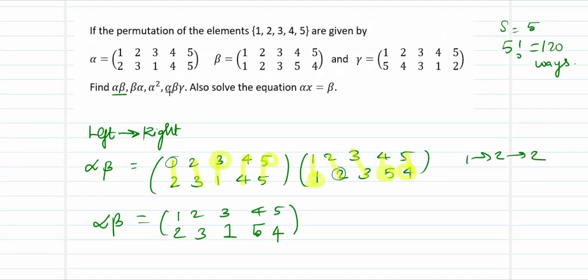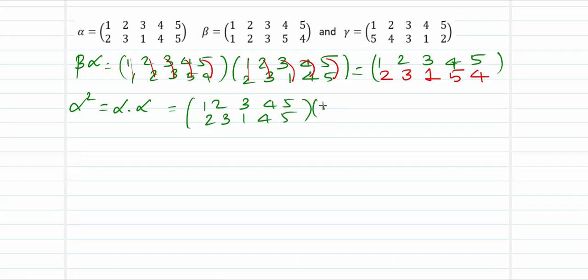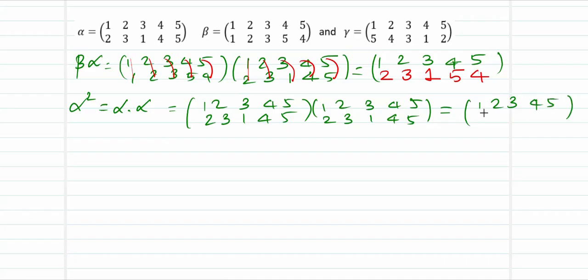The next quantity needed is alpha square. Alpha square is nothing but alpha times alpha — the same composition done for alpha twice. So place 2 copies of alpha side by side: (1, 2, 3, 4, 5) → (2, 3, 1, 4, 5), and do the composition from left to right. 1 maps to 2 then to 3; 2 maps to 3 then to 1; 3 maps to 1 then to 2; 4 maps to 4 then to 4; 5 maps to 5 then to 5. So alpha squared = (1, 2, 3, 4, 5) → (3, 1, 2, 4, 5).